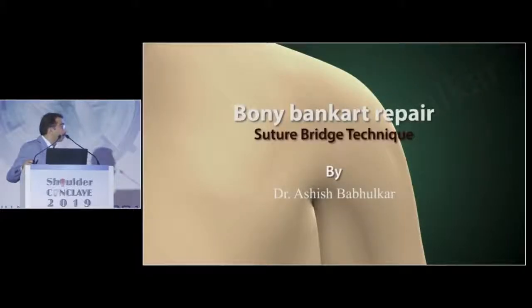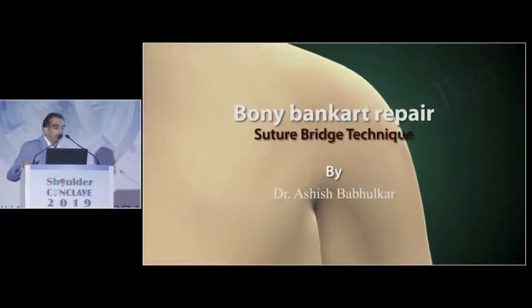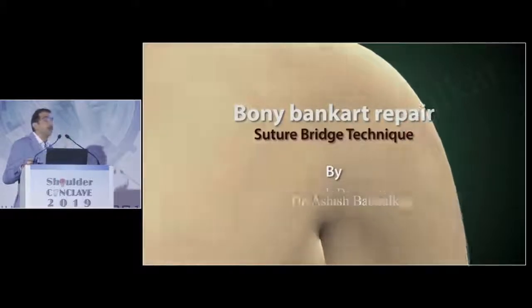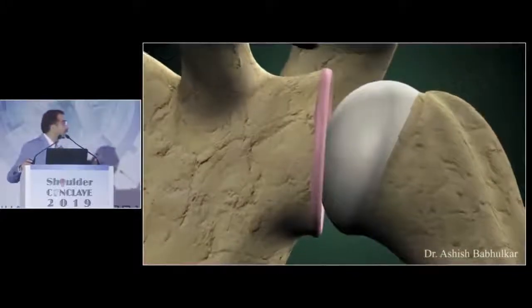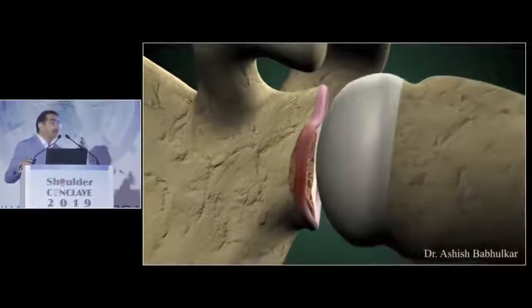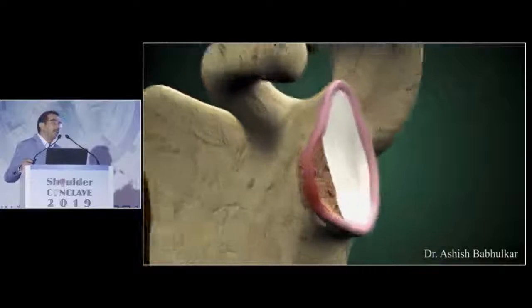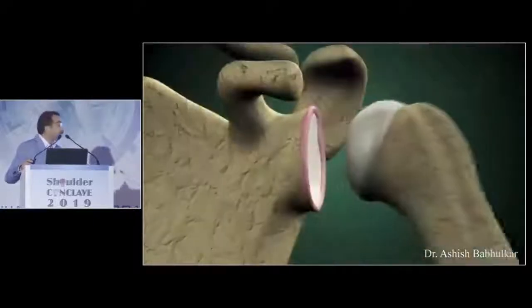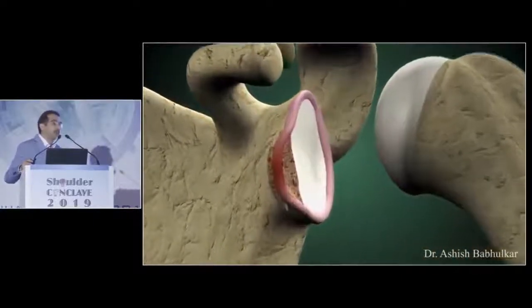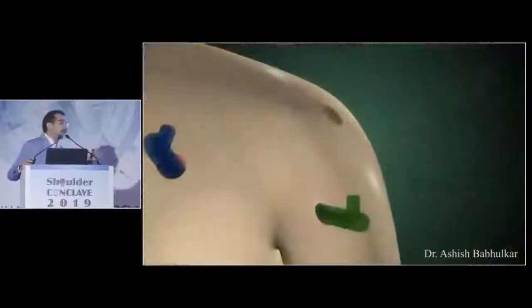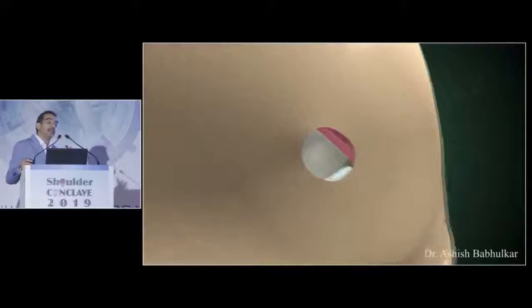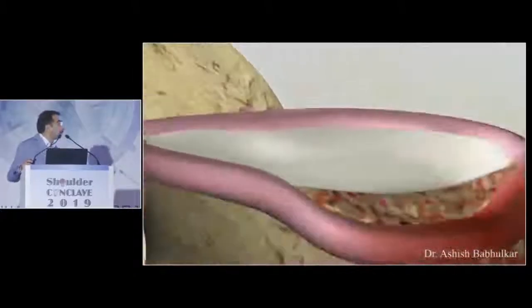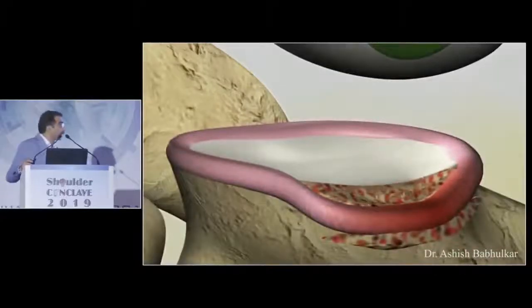This is a brief animation of the procedure — much better understood on the graphic than on live surgery. Because this is a double-row, the medial anchor has to go far medial, with a double-loaded anchor on the medial side. This is an elegant technique because it doesn't involve passing sutures through the fragment, as the fragment tends to be very fragile and can disrupt if you start penetrating it.